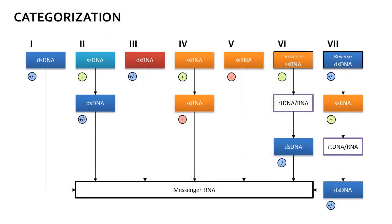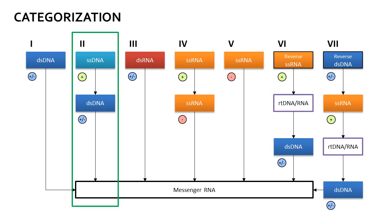Using the Baltimore classification, the AAV falls into Category 2, a general class comprised of single-stranded, positive or sense DNA molecules that, prior to the production of messenger RNA, synthesize the complementary strand of antisense DNA. This yields a double-stranded DNA construct that then partakes in the formation of DNA concatemers that can either remain episomal in the host nucleus or undergo insertion into a specific region on chromosome 19.